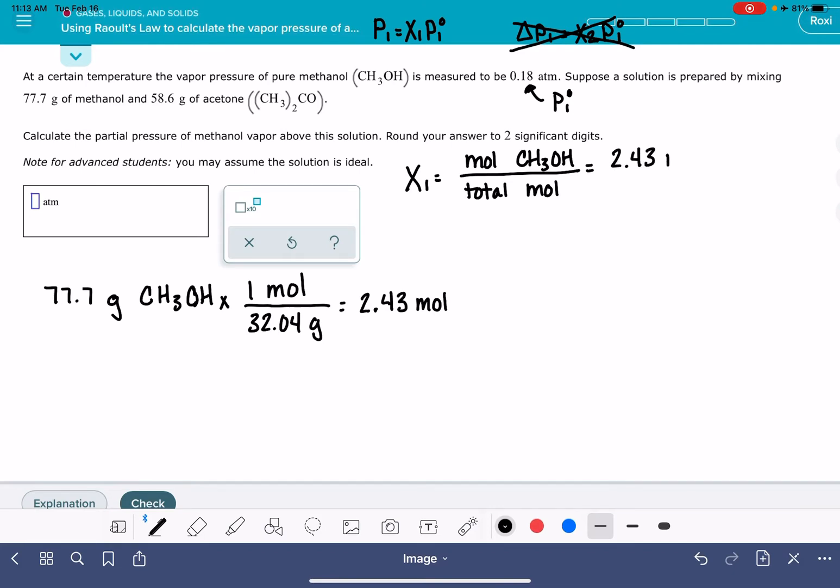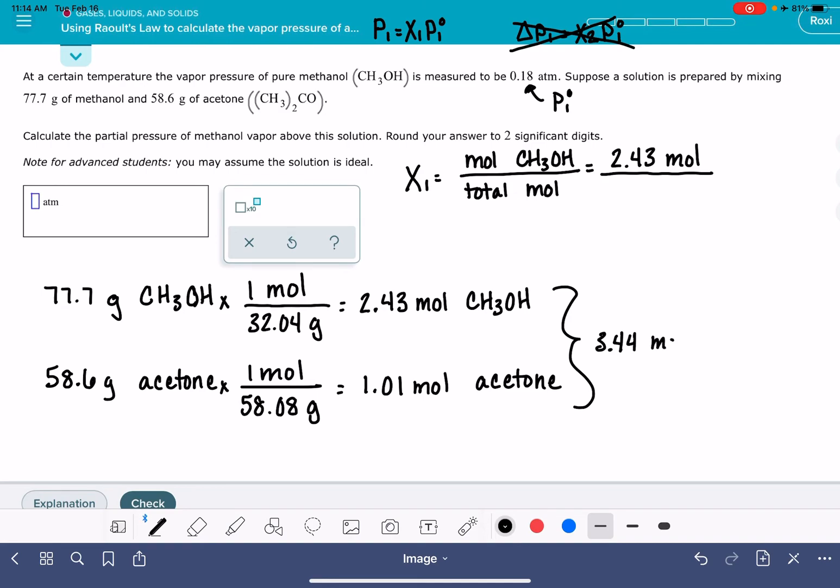And we want to divide that by our total moles, which is going to be the moles of methanol and also the moles of acetone. We have 58.6 grams of acetone, and acetone's molar mass is 58.08 grams. 58.6 divided by 58.08 is 1.01 moles. And so our total number of moles is going to be these two added together. 3.44 moles total.